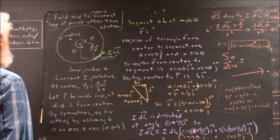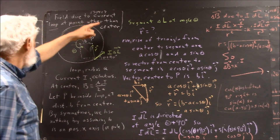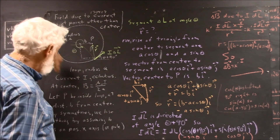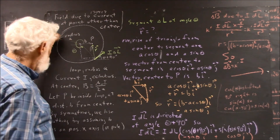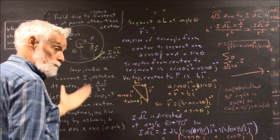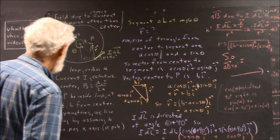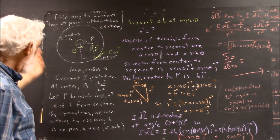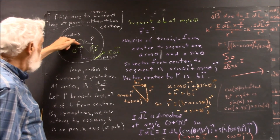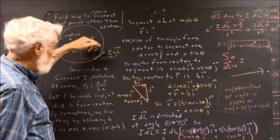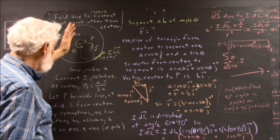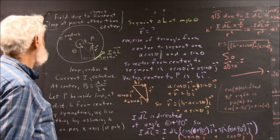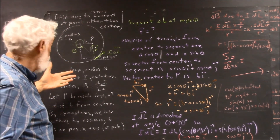Now I'm going to quickly summarize. We're trying to find the field due to a current loop at a point O in the center. We posit a current loop of radius A with a current I counterclockwise around the loop, and then we posit a point at distance B from the center. It doesn't matter where this point is, doesn't matter how we rotate the loop — we're going to get the same thing.